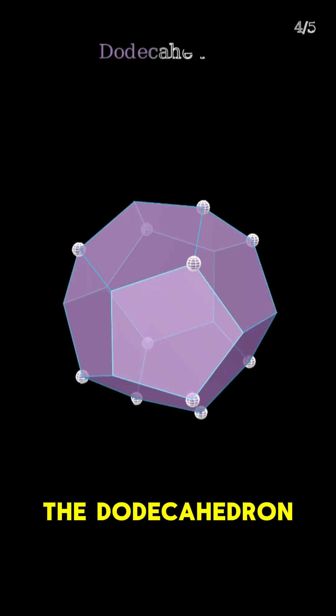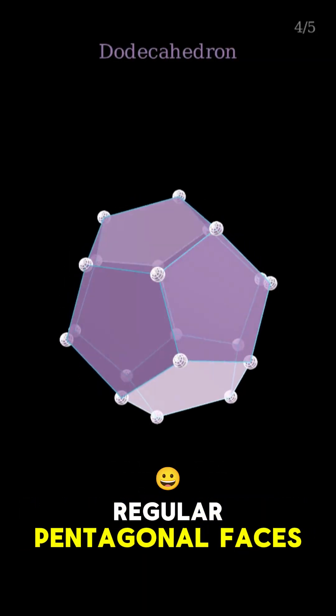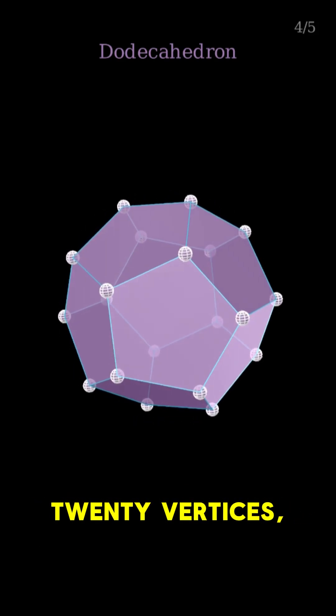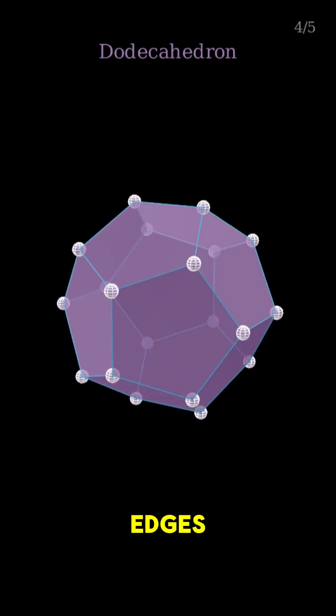The dodecahedron features 12 regular pentagonal faces, 20 vertices, and 30 edges. Plato's model of the cosmos, the ether.